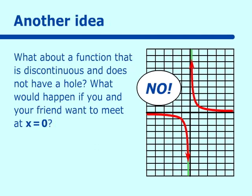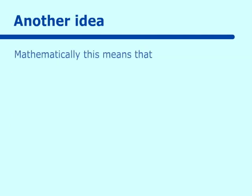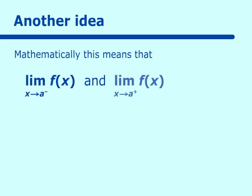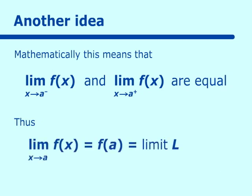So what are we talking about mathematically? Well we are saying that if you approach a function limit from the left and you approach the limit from the right of your function, and they are equal, then you have a limit. And thus we say it is the limit as x approaches a of your function f of x and that equals f of the value a.